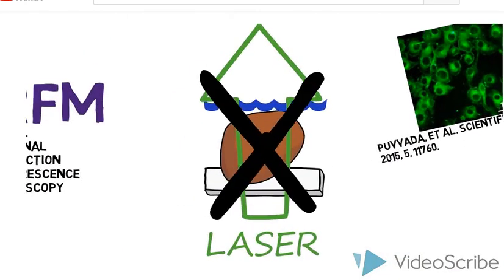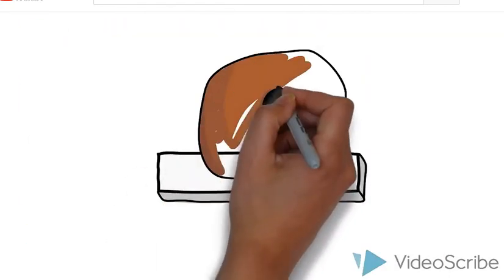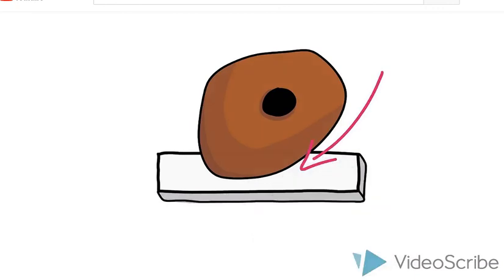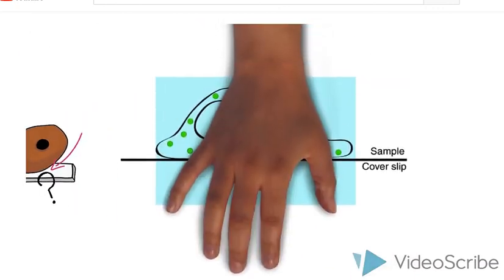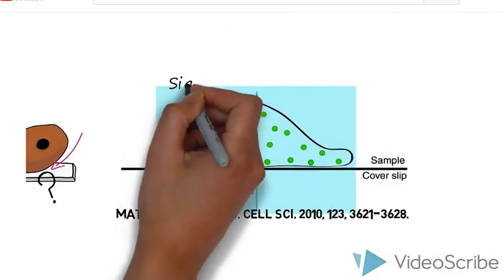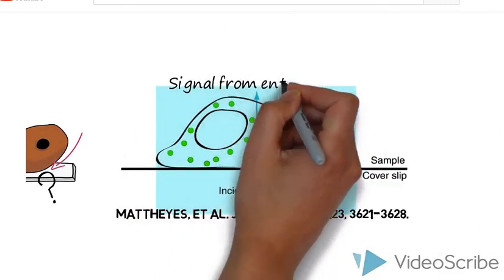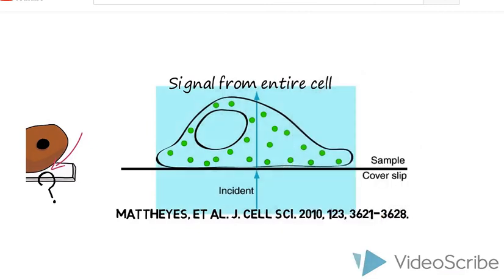Now, what happens if you aren't interested in the entire cell? What if you're only interested in the cell's interaction with the glass surface? Is the whole cell body stuck to the glass, or just a certain part of it? This traditional setup is not going to help you answer this question, because the whole volume of your cell is being excited and producing the fluorescent signal.